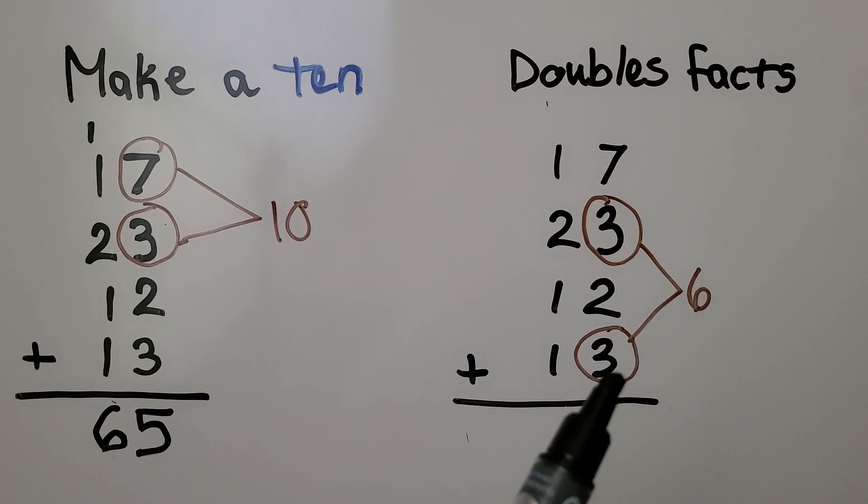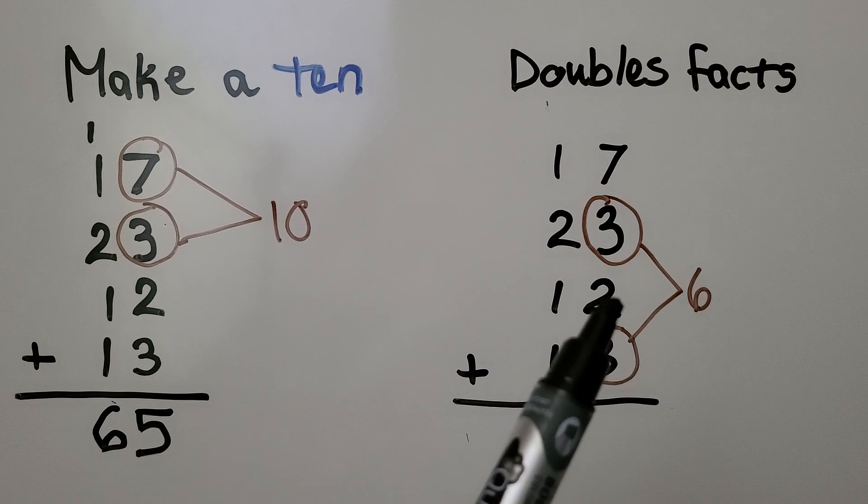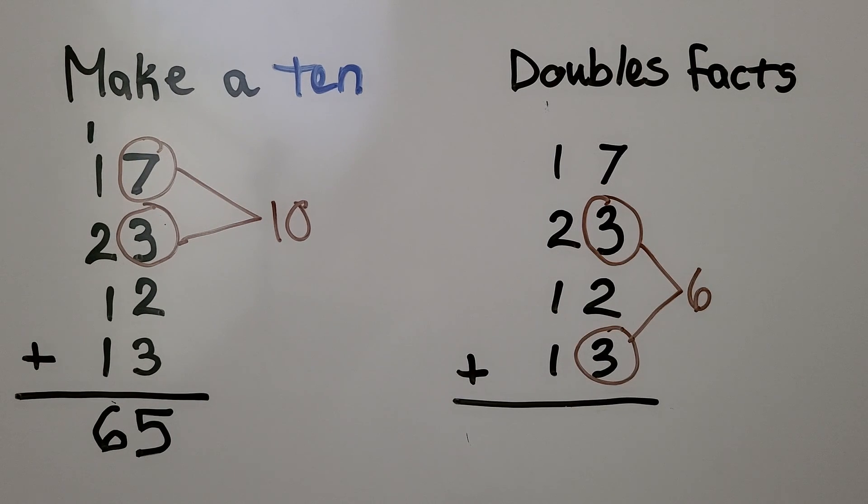We could also start with the doubles facts, then add the 2. We have 6 and two more is 8. Then add the 7. Because we can add in any order, it's equal to 15.